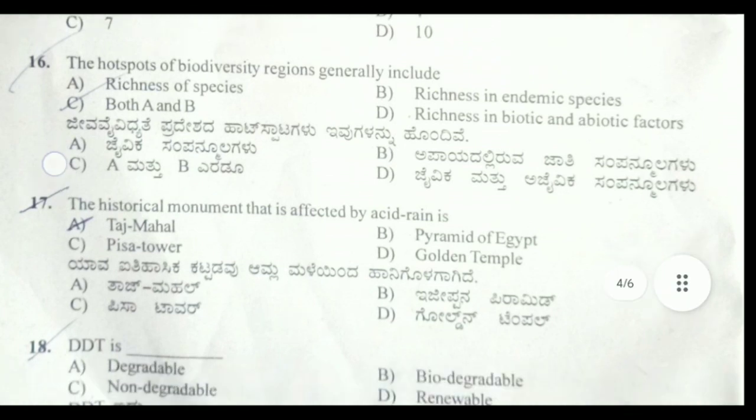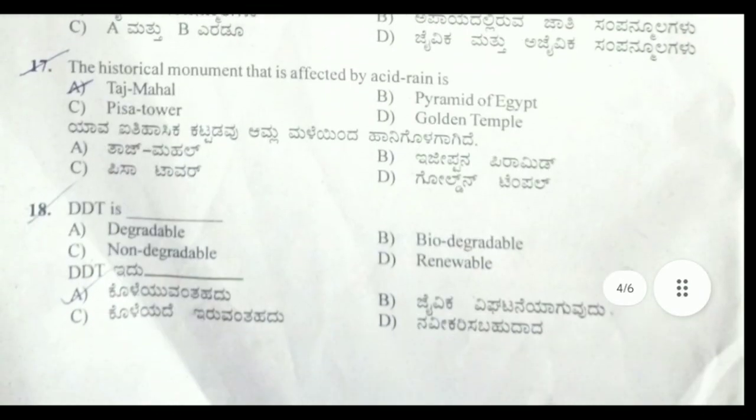Sixteenth question: the hotspots of biodiversity regions generally include both A and B, option C. Seventeenth question: the historical monument affected by acid rain is the Taj Mahal, which is at Agra.